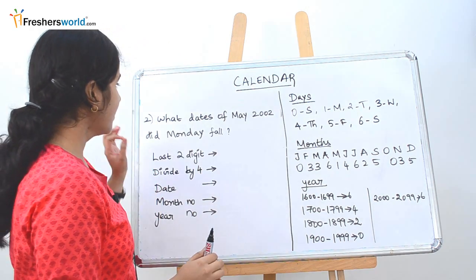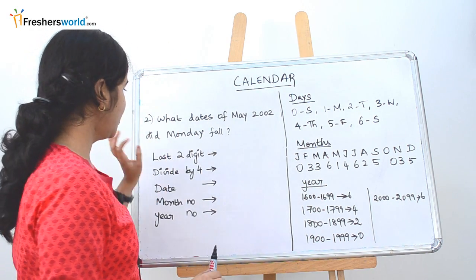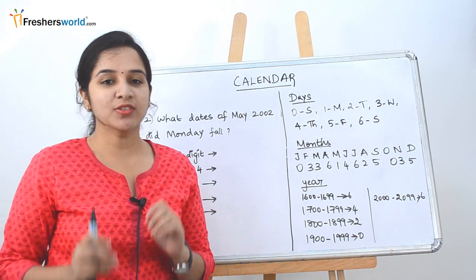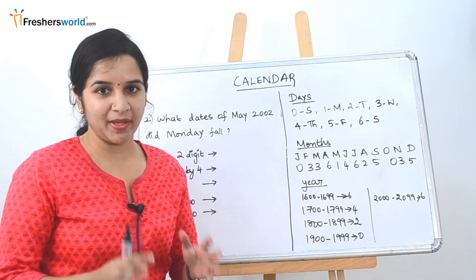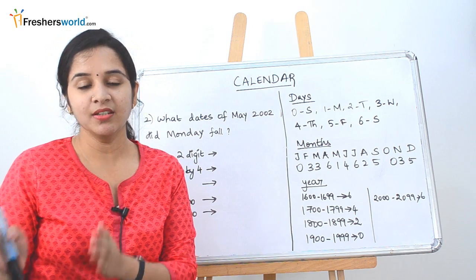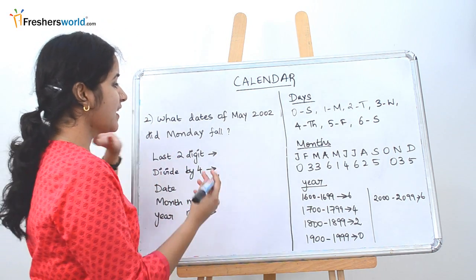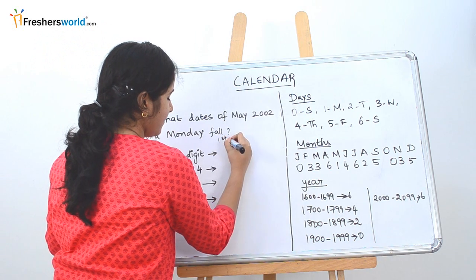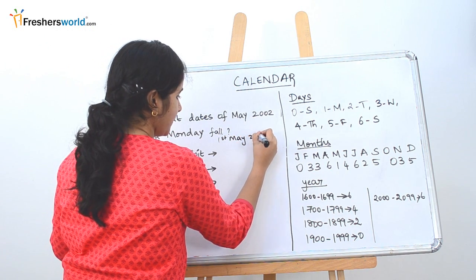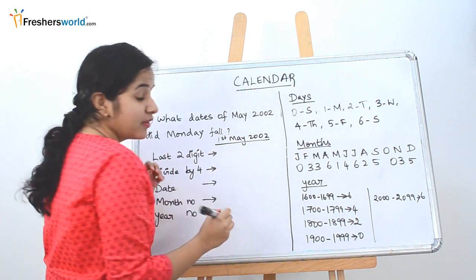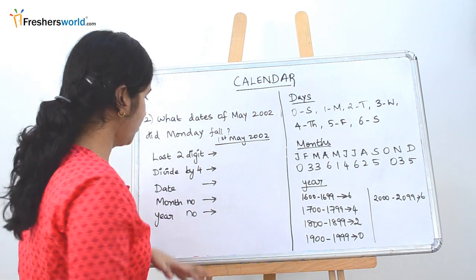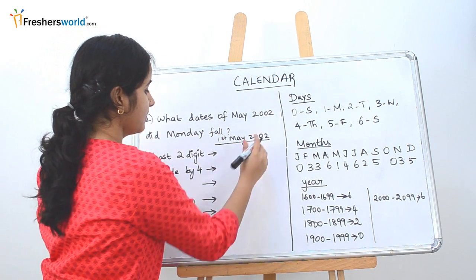The second sum is that what dates of May 2002 did Monday fall? So what does this question mean? They are asking that in 2002 May, what are the various dates in which Monday has fall? So first how to solve it? The first step is that let's take, we are going to take the date 1st May 2002. We are going to solve it in the usual method that we do. Take the last two digit of the year, 0, 2.